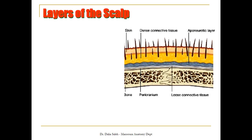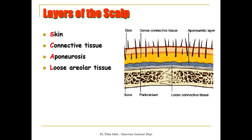Starting with the layers of the scalp. The scalp is made of five layers and it is made of five letters. The S stands for the skin, the C stands for the connective tissue layer, A for aponeurosis, L for loose areolar tissue, and P for pericranium. So these are the five letters composing the word SCALP, forming five layers from superficial to deep: skin, connective tissue, aponeurosis, loose areolar tissue, and pericranium.